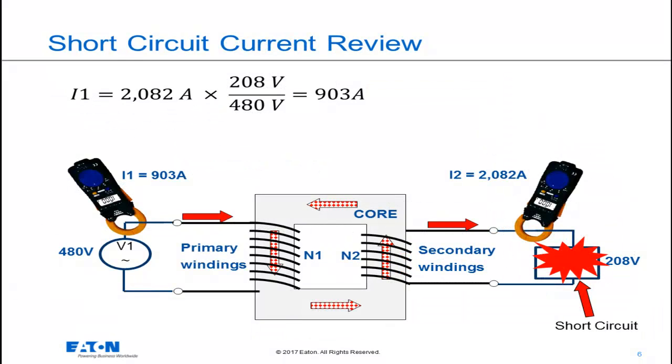This is just a different way of looking at that exact same calculation that we just made. During this faulted condition, if I place a current meter in the secondary and primary conductors of this transformer, the ammeter on the secondary would read 2082 amps, the current being delivered to the short circuit. The ammeter on the primary would read 903 amps, which is calculated in the equation at the top side of this slide.